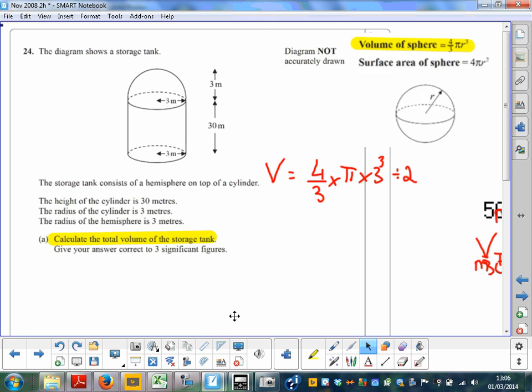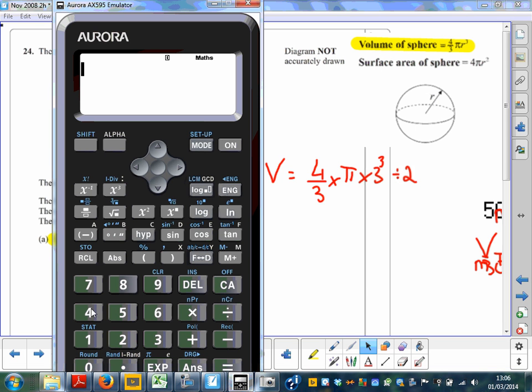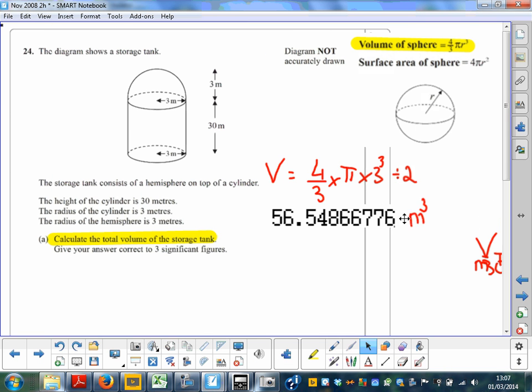On the calculator, I'll show how I do it. It will be 4 divided by 3, times π, times 3 cubed, divided by 2. That gives 18π or 56.548... cubic meters.